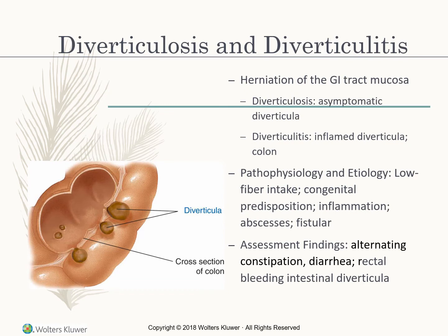Diverticulosis and diverticulitis involve herniation of GI tract mucosa. Diverticulosis is asymptomatic diverticula, while diverticulitis is symptomatic, with inflamed diverticula — little pouches usually in the colon. Causes include low fiber intake and congenital predisposition. Assessment findings include alternating constipation and diarrhea, rectal bleeding, and abscesses or fistulas from intestinal pouching.